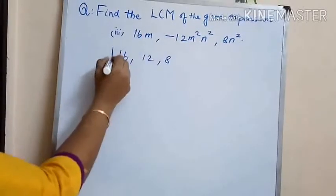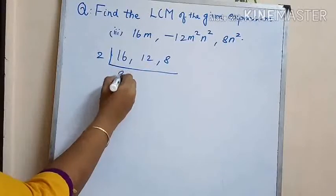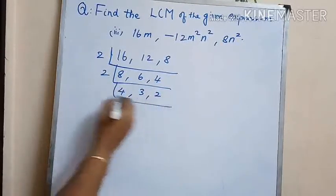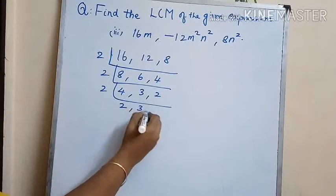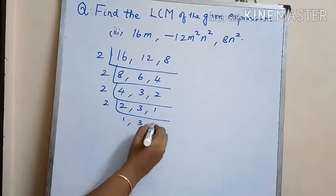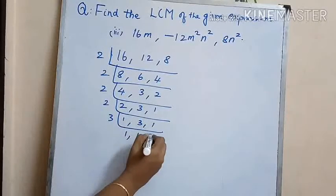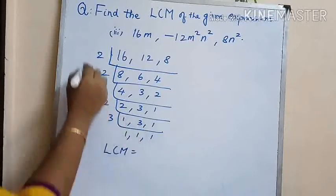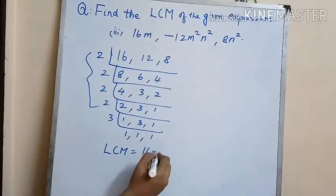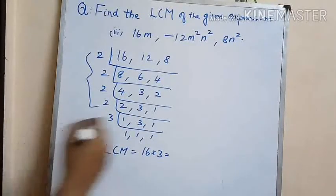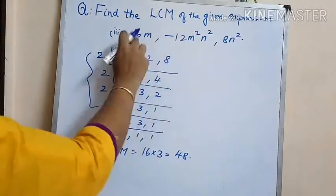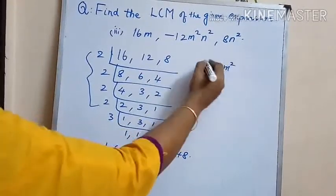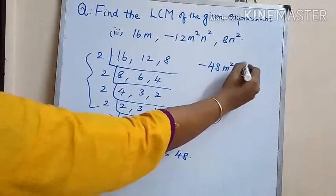Let us take the numerical parts and find the LCM first. For 16, 12, and 8, the LCM is 48, that is 16 into 3 which is 48. Along with the negative sign we take minus 48, and the variable part is m squared n squared. So the LCM of the given polynomials is minus 48 m squared n squared.